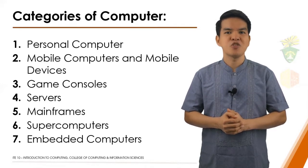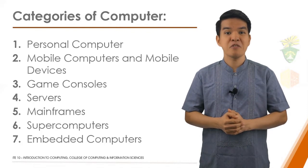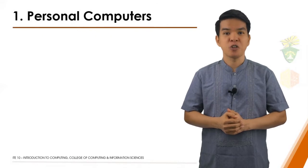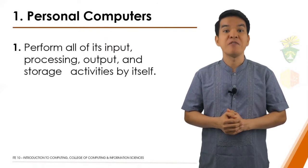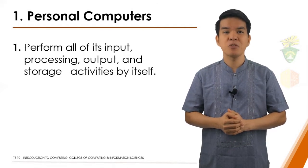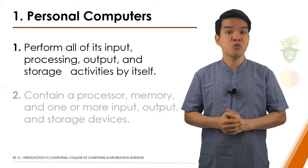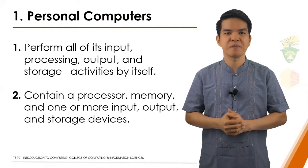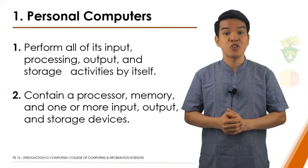The first category is the Personal Computer. A personal computer is a computer that can perform all of its input, processing, output, and storage activities by itself. It contains a processor, memory, and one or more input, output, and storage devices. Personal computers also often contain a communications device.